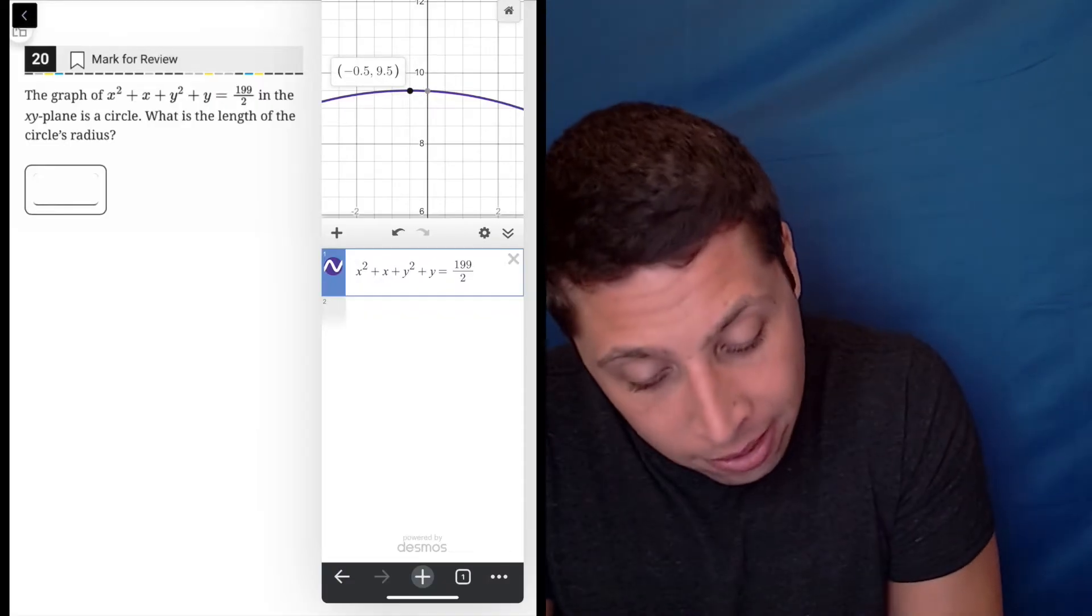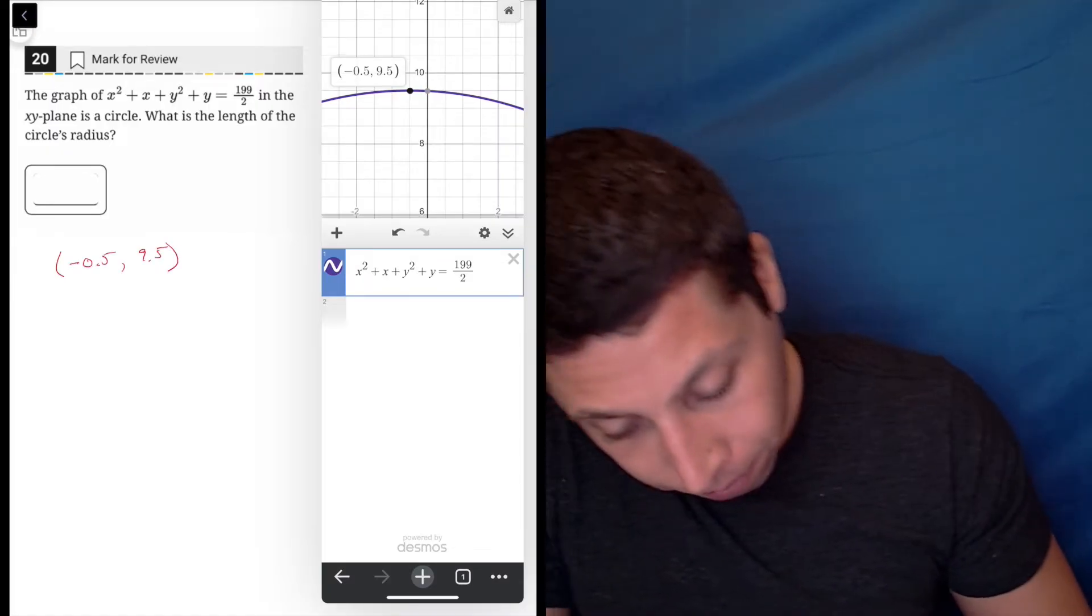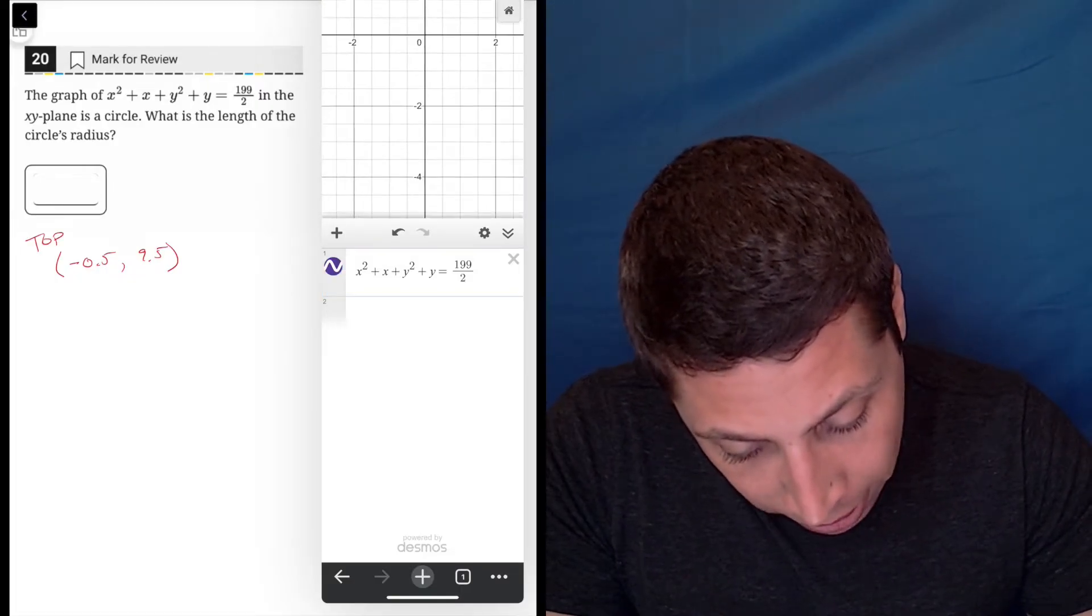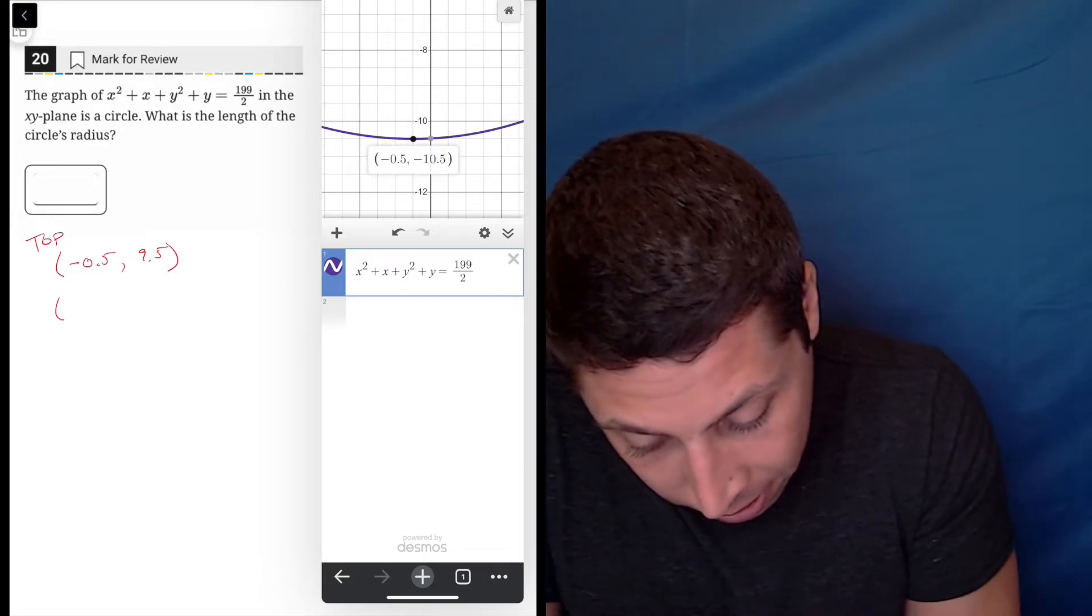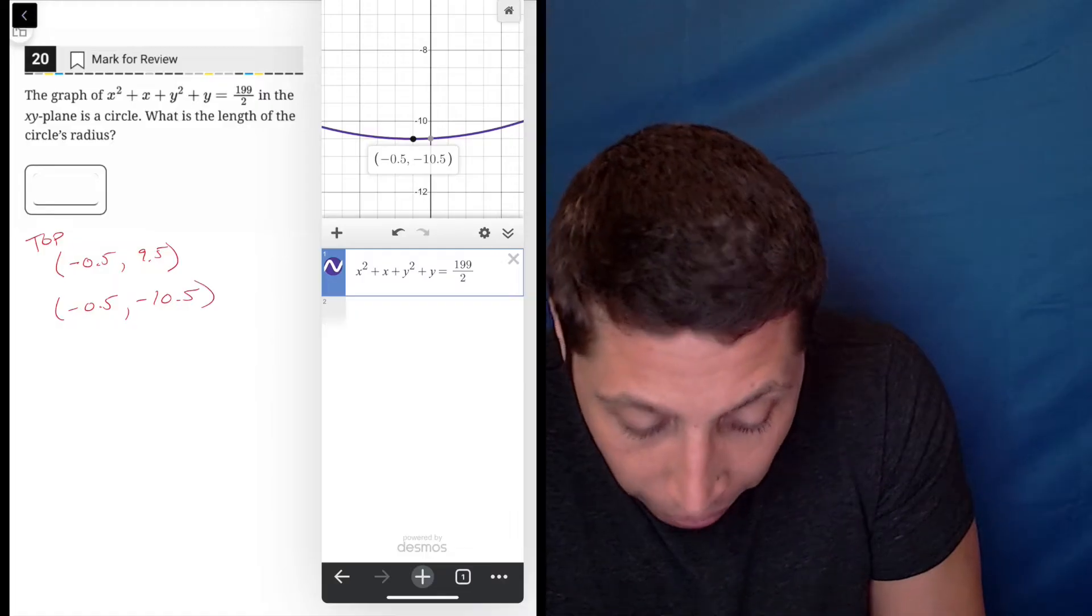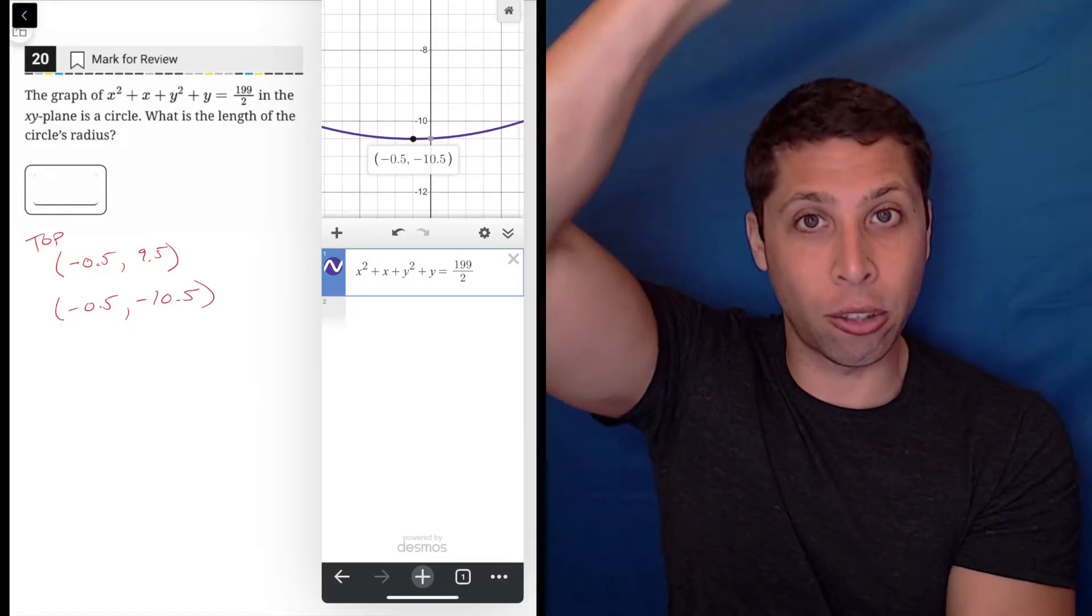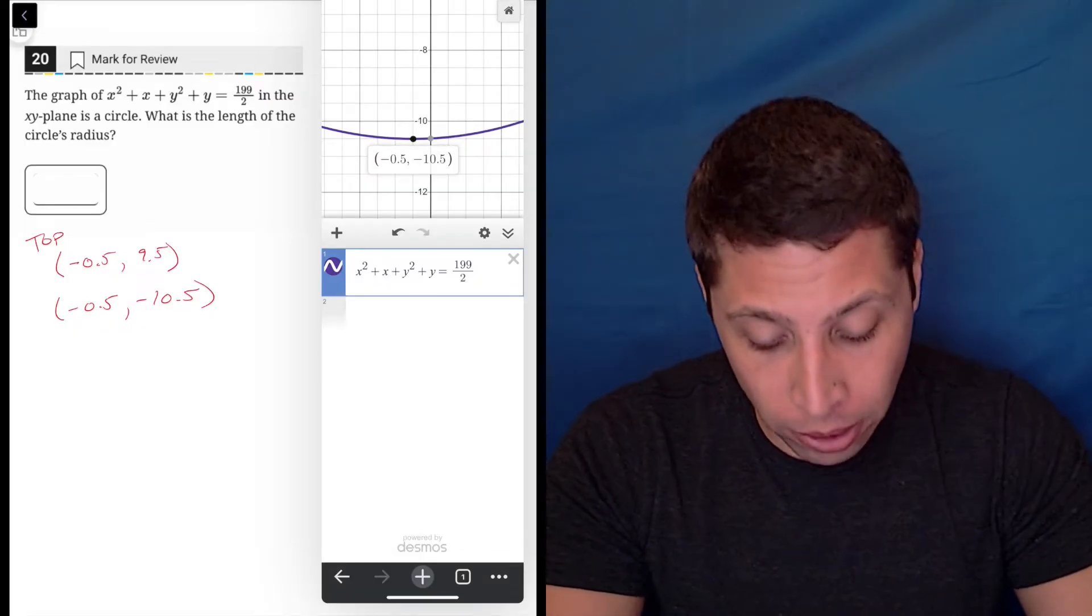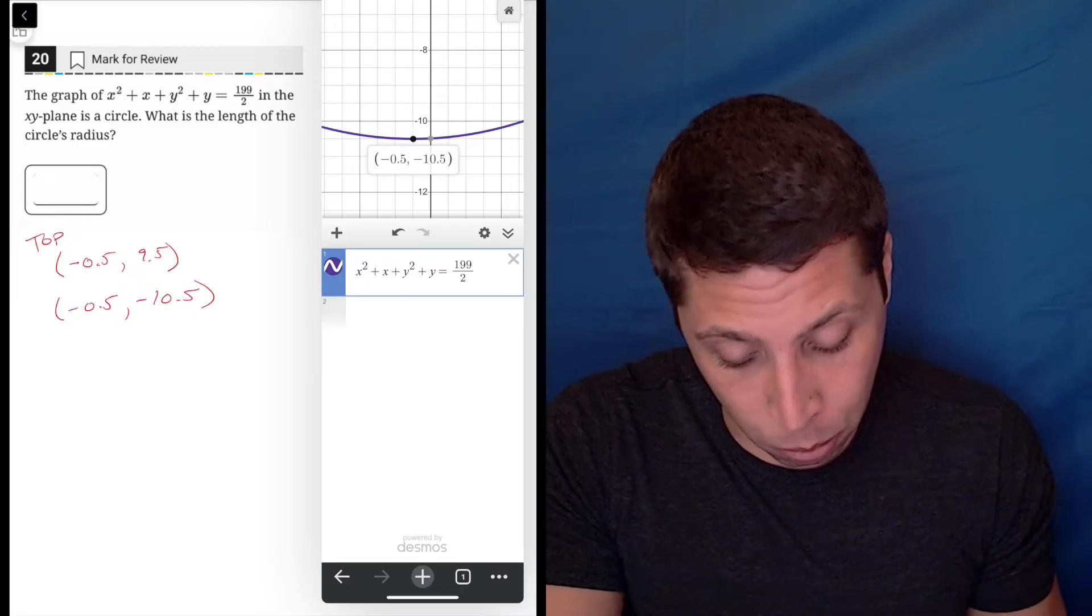So let me get those points. So that is the point, negative 0.5, 9.5. That's the top. And scroll down, let's find the other one. So it's this one. That's negative 0.5 and negative 10.5. Notice that the x-coord is the same. So these are literally directly across from each other on the top and the bottom, but it's that y distance between them that matters.